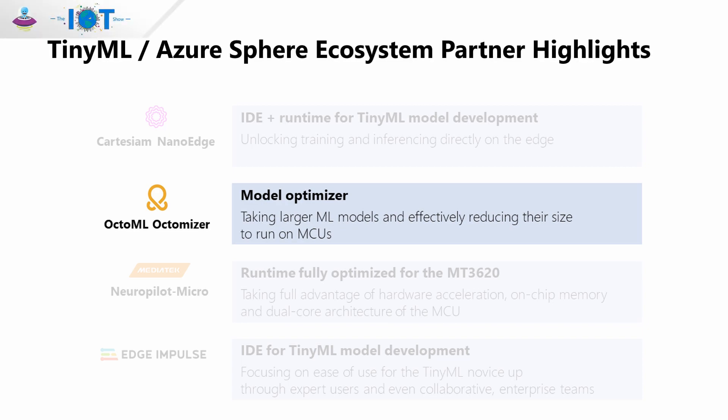There are also use cases where folks may have existing models based on decades of data. What if you want to take that data and turn it into a model that fits on small devices? For this type of customer, we recommend OctoML. OctoML has a product called Optimizer, which allows you to take an existing larger machine learning model and convert it into a TinyML model for your hardware. That model can run on the MicroTVM runtime, which is miniaturized for Cortex-M MCUs and in our case, Azure Sphere. So you take an existing TensorFlow, PyTorch, or ONNX model and convert it to something that runs on Sphere or other MCUs.